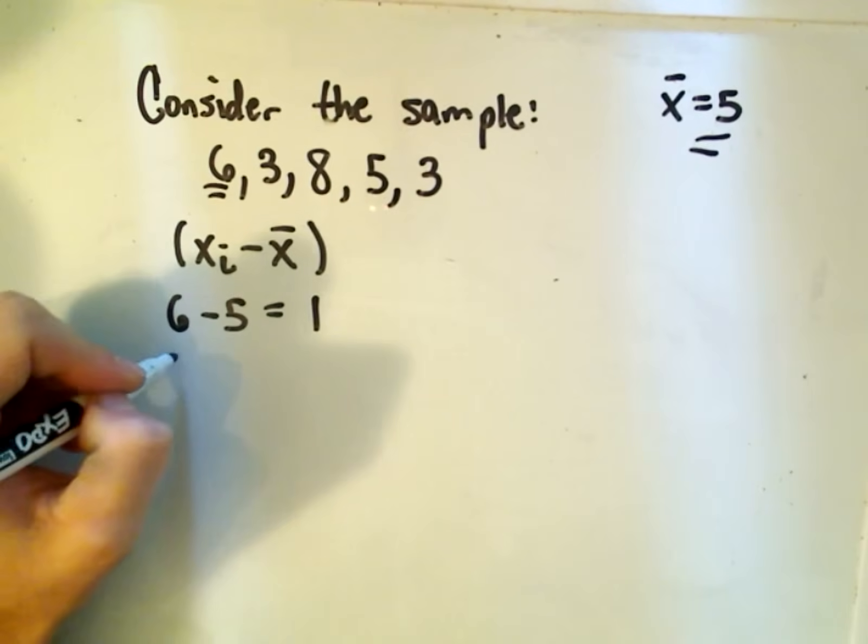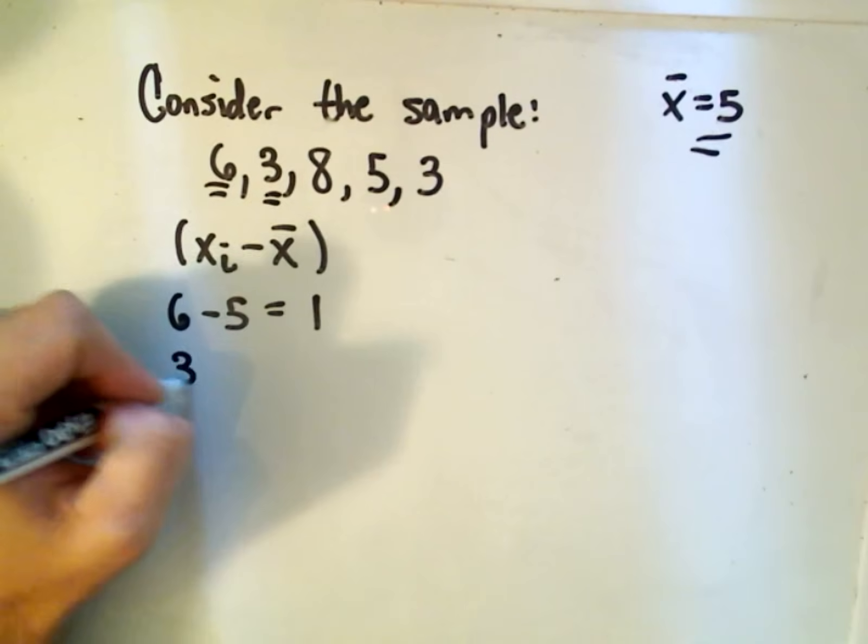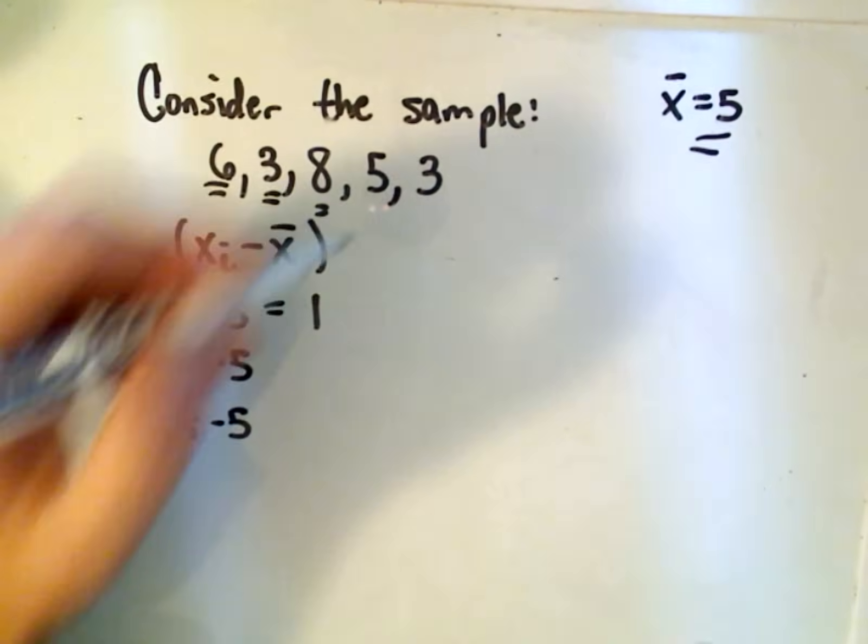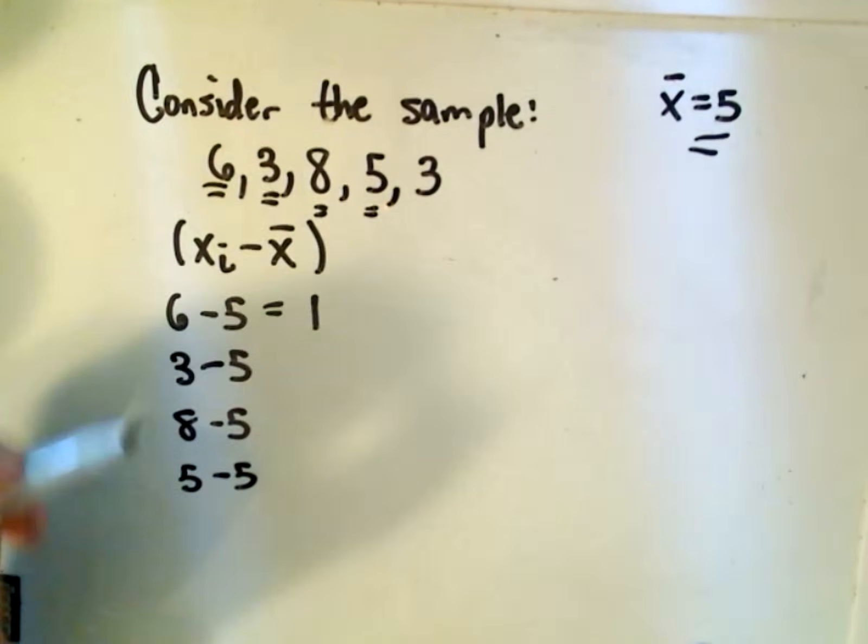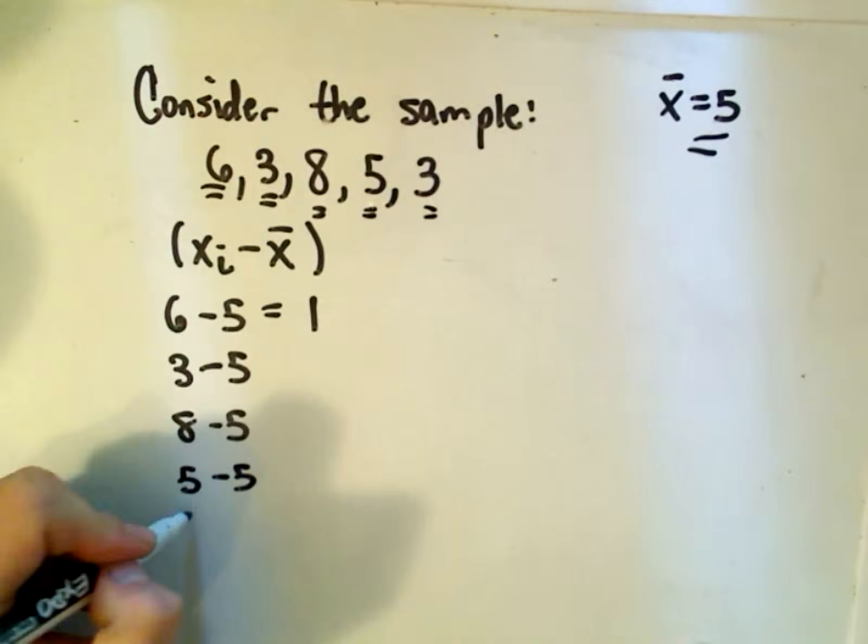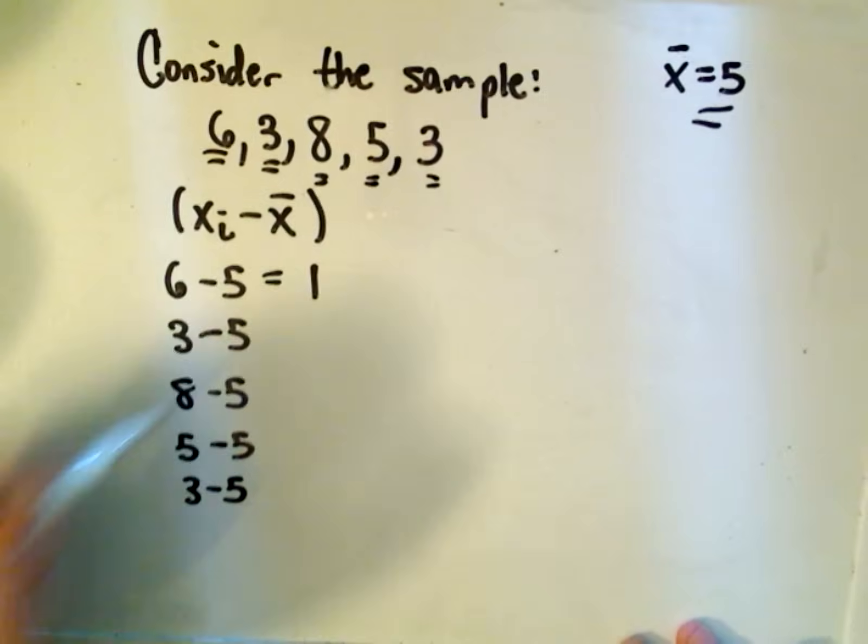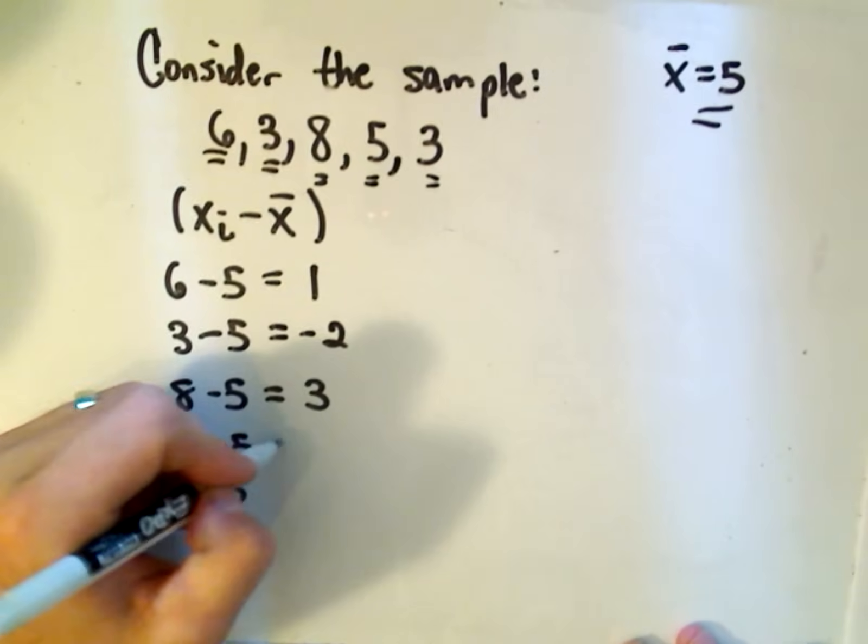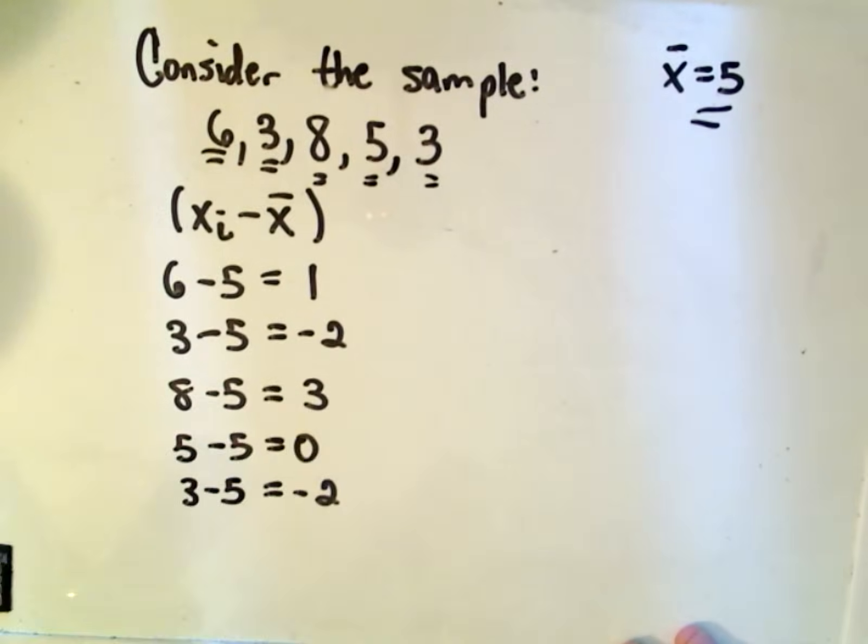So 6 minus 5 is 1. I'll take 3 minus 5. I'll take 8 minus 5. 5 minus 5. And then again, 3 minus 5. So let me calculate that. Looks like we get negative 2, positive 3, 0, and negative 2.